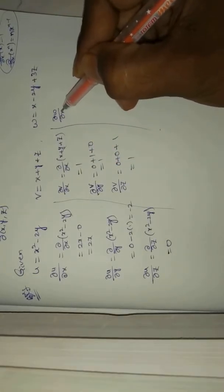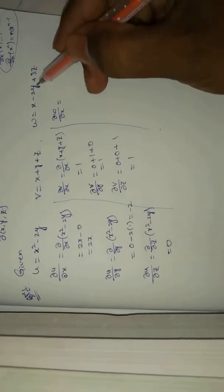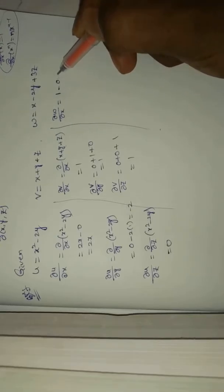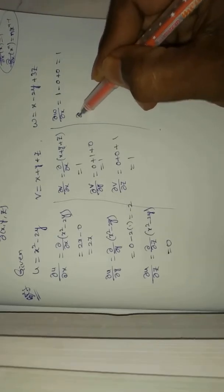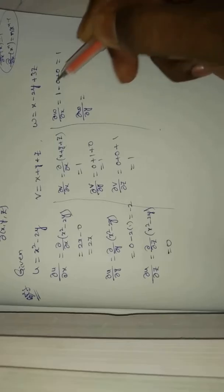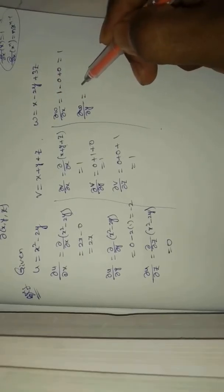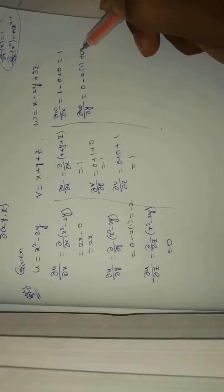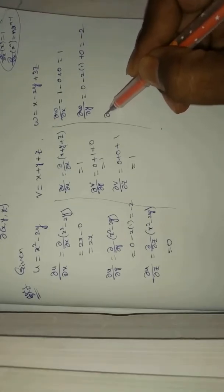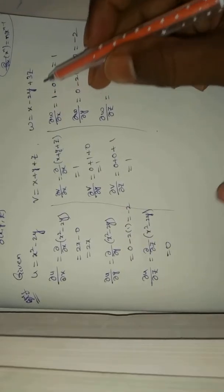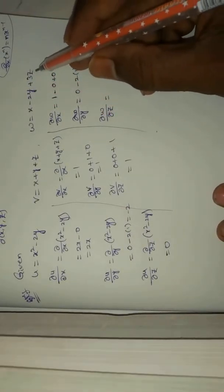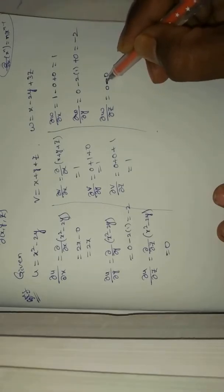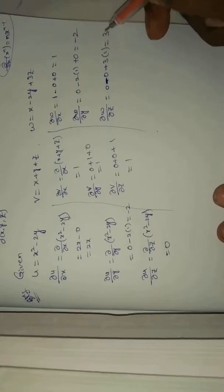Next, ∂w/∂x: the y and z terms become 0, and ∂/∂x of x equals 1, so this equals 1. ∂w/∂y: the x and z terms are 0, giving 0 minus 2 times 1 plus 0, equals minus 2. ∂w/∂z: the x and y terms are 0, giving 0 plus 0 plus 3 times 1, equals 3.